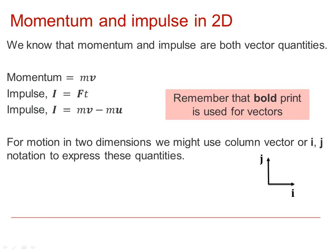In two dimensions, we can use a column vector, or use the unit vectors i and j along the x and the y axes. So, for example, we might have a velocity 3i plus 4j, or as a column vector, the velocity 3, 4.